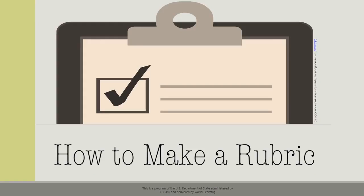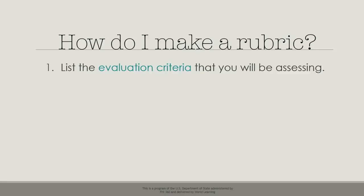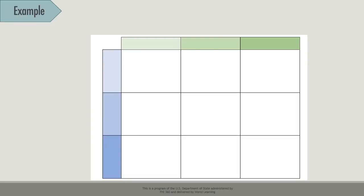Now that we have talked about the basics of rubrics, let's look at how we can make one. We will look at some examples of rubrics for critical thinking and talk about ways to create your own rubrics. Step 1: list the evaluation criteria that you will be assessing. This rubric is for evaluating critical thinking, and this teacher has chosen to evaluate listening, reflecting, and explaining.